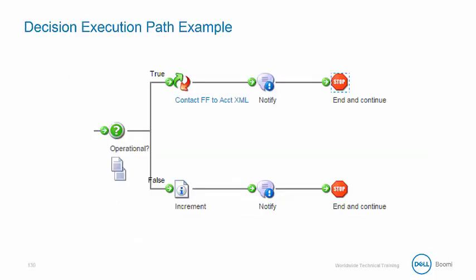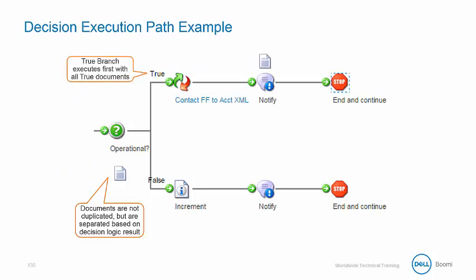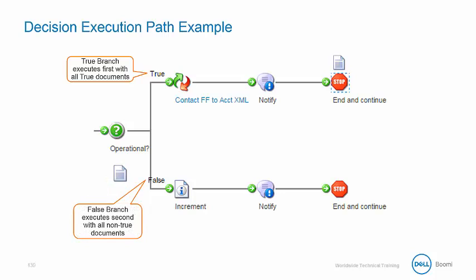Here's an animation illustrating the effect of the decision shape on document flow. Documents are not duplicated but are separated based on the decision logic result. The true branch executes first with all true documents, and then the false branch executes with all non-true documents.